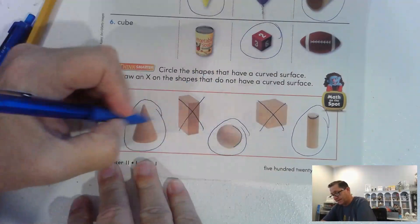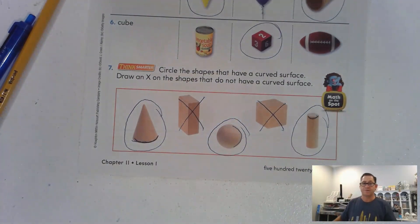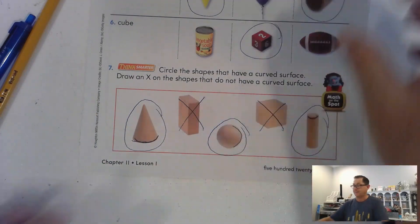There. There. And there, right? So those three have curved surfaces. Those two do not. Let's look at page 524.